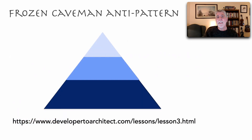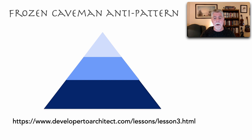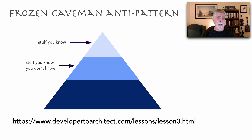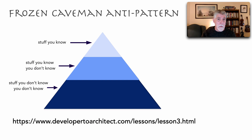Lesson three, which I recorded almost four years ago, identified one way of overcoming this version of the Frozen Caveman anti-pattern. In that video I described the triangle of knowledge: at the top are things you know really well; in the middle is stuff you know you don't know — you're familiar with the technology but not fully capable of leveraging it; and the biggest area at the bottom is the stuff you don't know that you don't know.